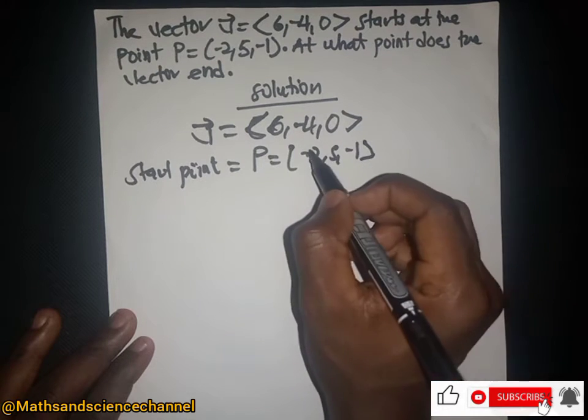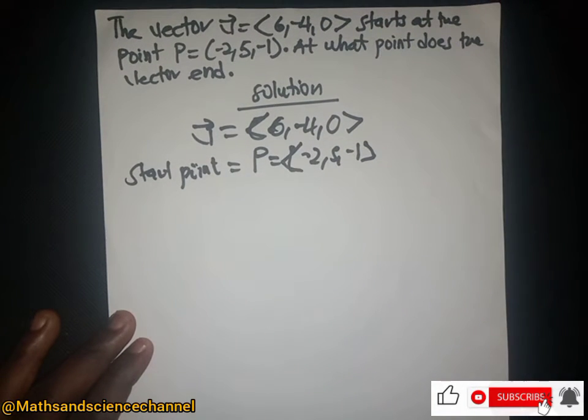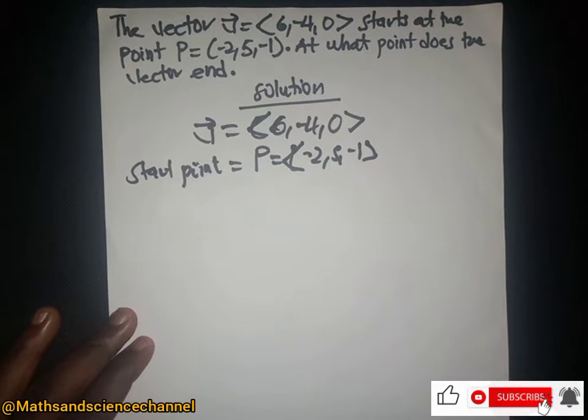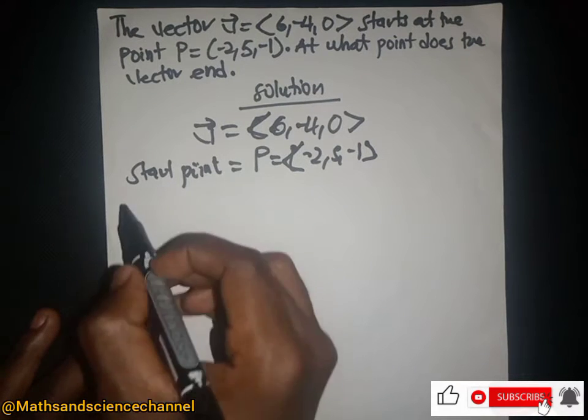Now for vectors, in order to find the point of the vector, it's just the end point coordinate minus the start point coordinate. We are giving the start point coordinate, but we don't know the end point coordinate.